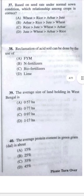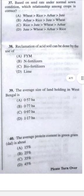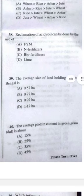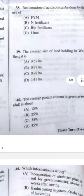Question 40: The average protein content in green gram is about — answer B, 25 percent.